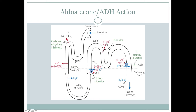Here is a picture of all the specialized pumps you should know, with the different drugs in green: potassium-sparing with aldosterone action, thiazides blocking the sodium-chloride pump, and loop diuretics blocking that specialized co-transporter. The largest amount of reabsorption is in the proximal convoluted tubule. The descending limb is permeable to water; the ascending limb is impermeable. Everything you need to know is here — aldosterone, ADH, all the drugs. This is a beautiful slide you should definitely study.